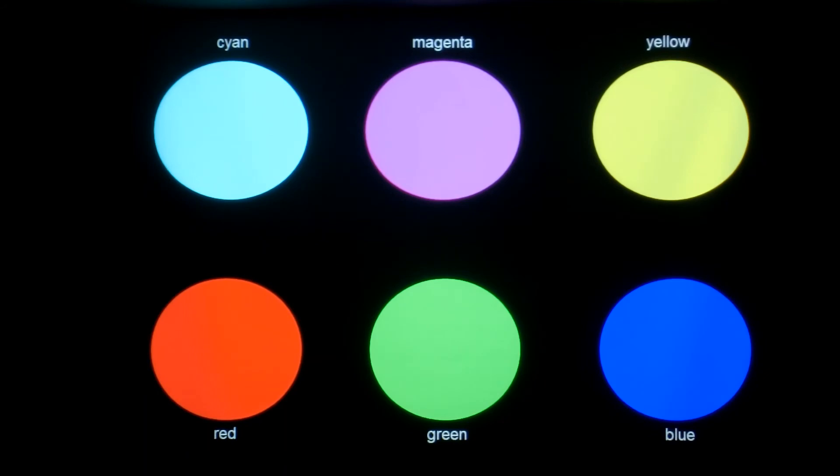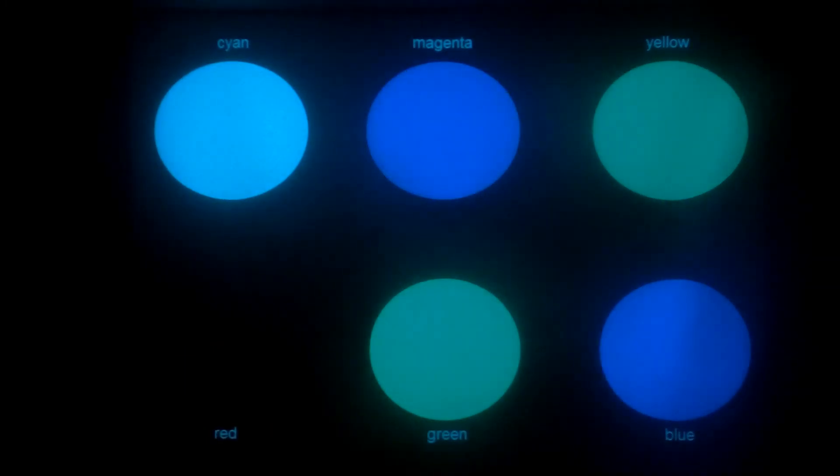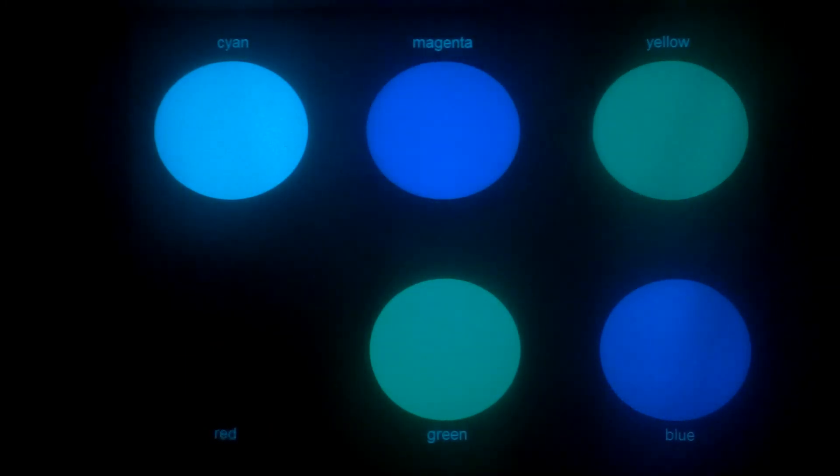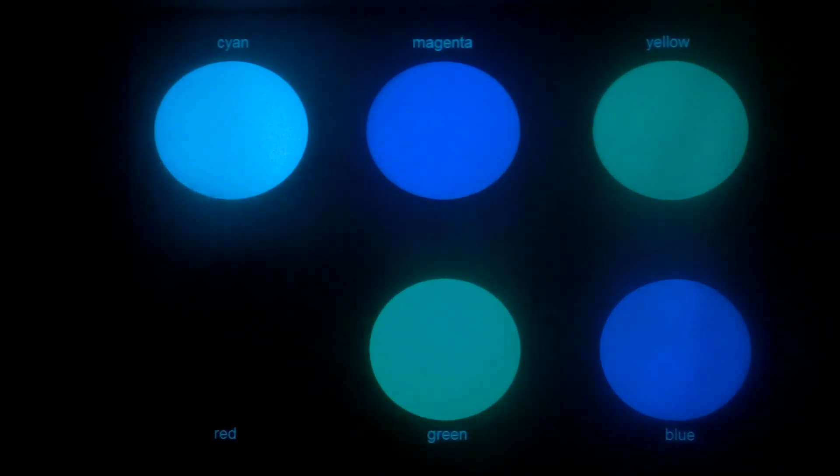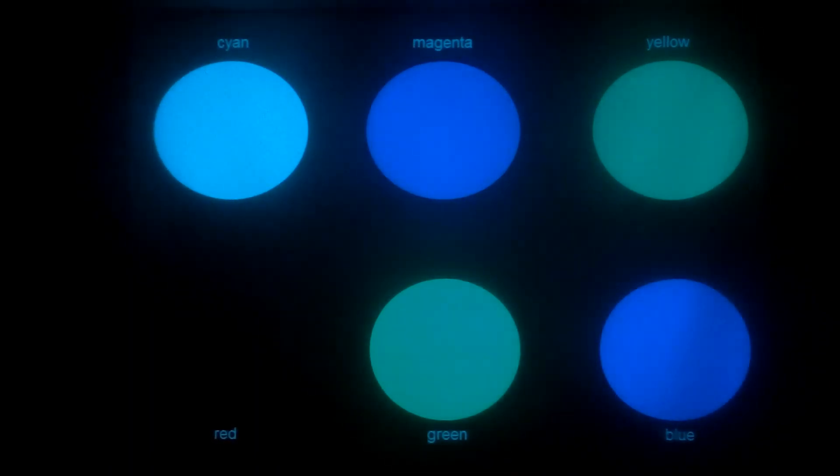And finally, the cyan filter will block red and allow green and blue both to pass through. So the green and blue both appear green and blue as normal. The magenta appears blue, the yellow appears green, the cyan appears cyan, and the red goes black.